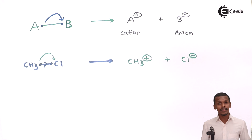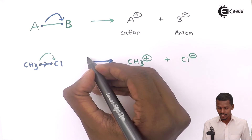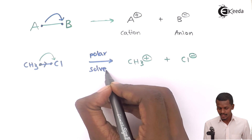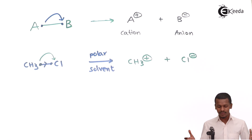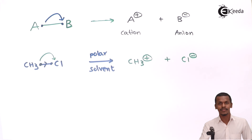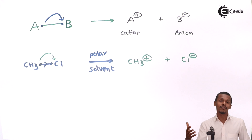So we get a cation and an anion as products. This result is obtained because of the use of a polar solvent — the environment must be polar in this case. Comparing this to homolytic fission: in that case, for example with ethane, we also get a methyl species, but that one is a methyl radical, not a cation.